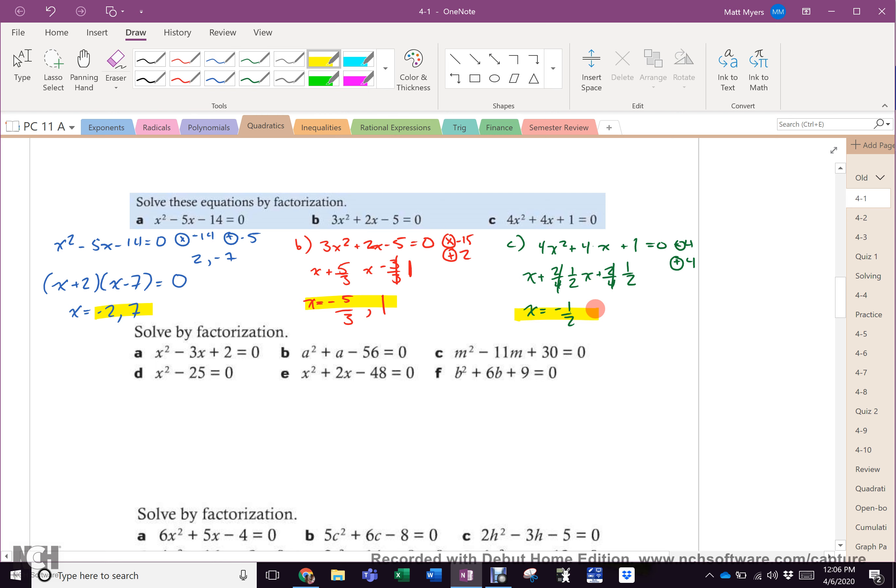So A, B, C, E, and F are all pretty normal. They're exactly like what we've done already five times. So I'm going to leave you to do those. I am going to have a look at D though. Now D is the difference of squares, isn't it? So D is X plus 5, X minus 5 equals 0. So nothing changes. X equals negative 5 and positive 5. And we like to write this as plus or minus 5. All the rest of those you should be able to do. So I'm not going to do them right now. That will be your work.